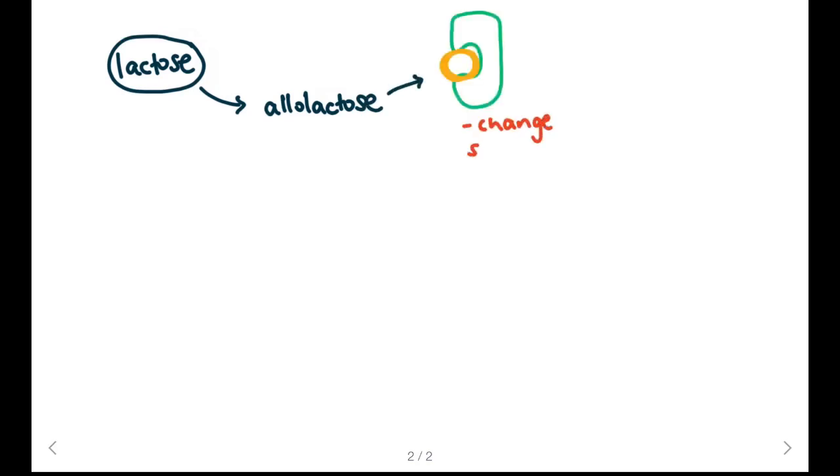One way to do this is in the presence of lactose, a molecule that's very similar to lactose called allolactose is going to bind to our repressor protein. When it binds to our repressor protein it's going to change the shape of the repressor, causing conformational changes.